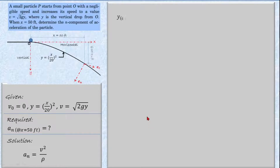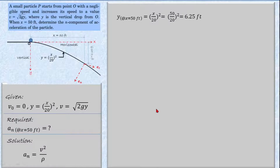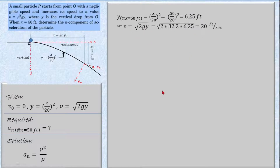We calculate the value of y either from the graph or using the formula. At x = 50 feet, y = (50/20)² = 6.25 feet. Now substituting the values of gravity and y into the velocity equation v = √(2gy), we get a velocity of 20 feet per second.